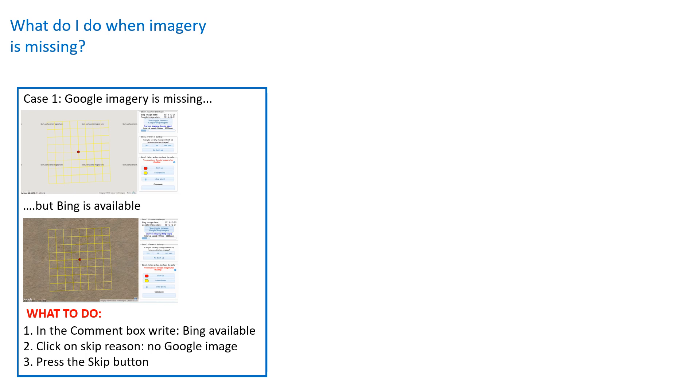Since the 50,000 locations are spread throughout the world, some locations will be very remote and satellite imagery may not be available. Hence, you may encounter one of these three situations. In case one, Google imagery is missing but Bing is available. All you need to do is write Bing available in the comment box, choose no Google image as the skip reason, and press skip.